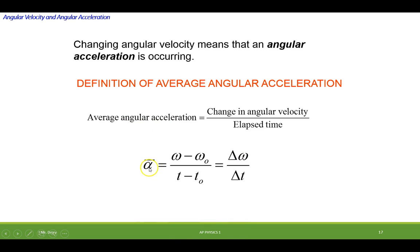This is alpha, meaning angular acceleration, and the line above it means average. So that would be the change in angular velocity over time.